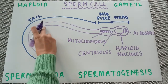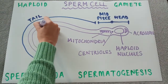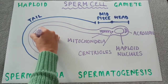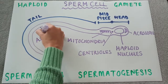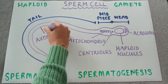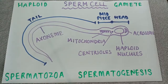Then the final part is the tail. The tail is made up of lots of microtubules, which together create what is called the axoneme, which allows the tail to be very bendy or flexible and therefore allows it to move very well.